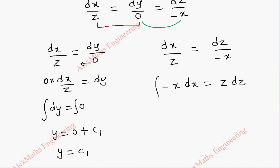Now we got the variable separable form. We go for integration on both the sides. This is minus x square by 2 and this is z square by 2, and we have a constant c2.